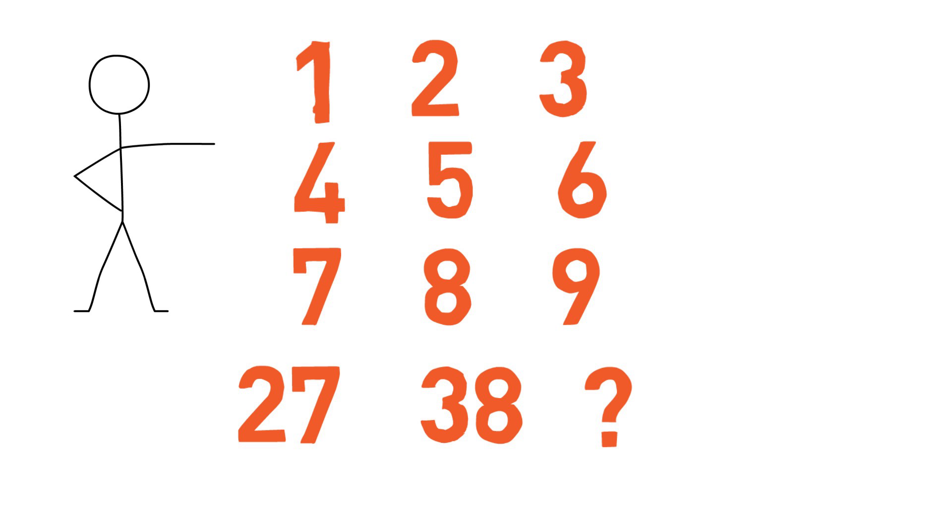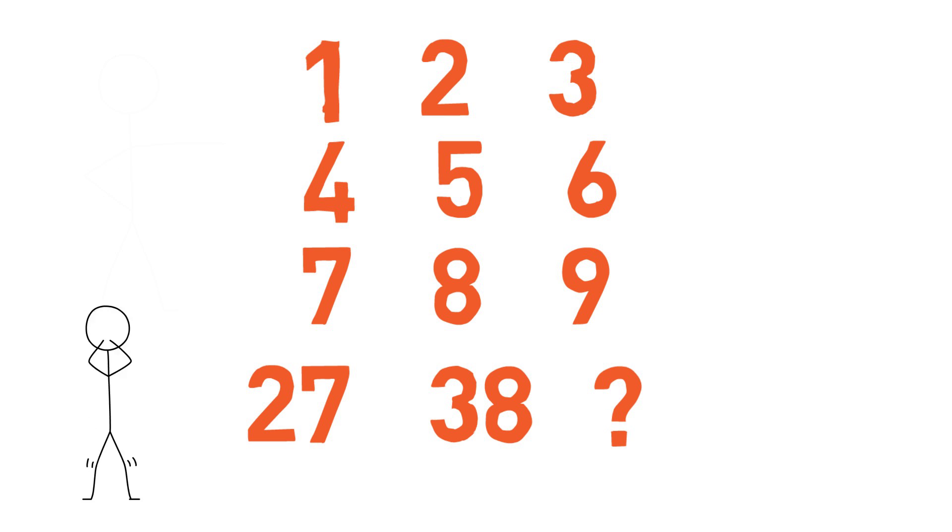Welcome back. Now the first three lines of this puzzle are pretty simple, isn't it? Just a series of numbers from 1 to 9. But the fourth line breaks the sequence completely.